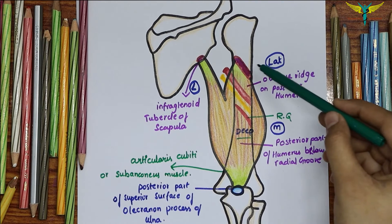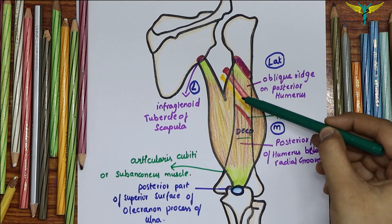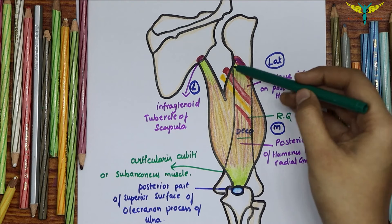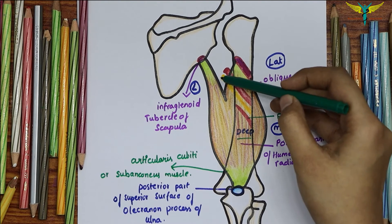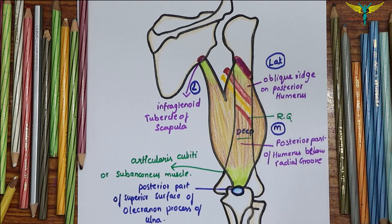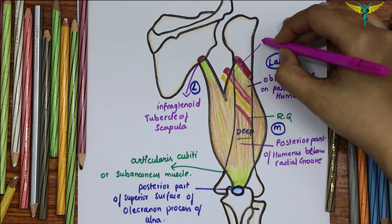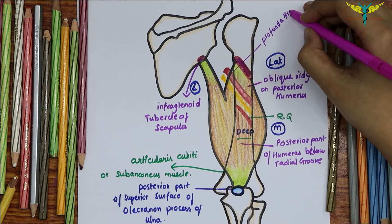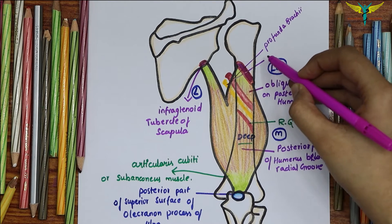Below the lateral head of the triceps brachii, the profunda brachii artery and the radial nerve are present. This is the profunda brachii, and this is the radial nerve.